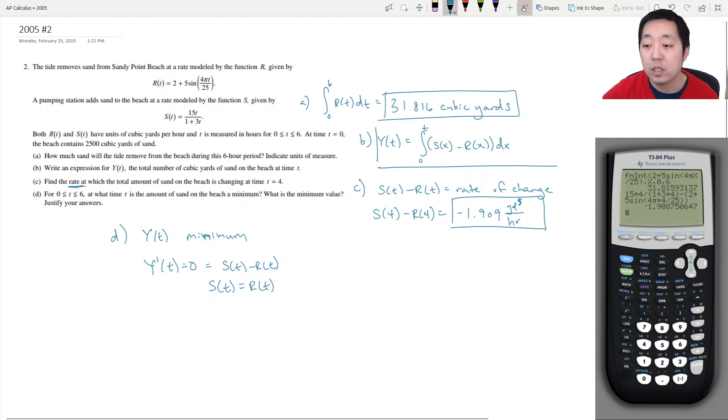And I do that by graphing. To find when they're equal to each other, I can plot S of T minus R of T. So S of T is 15X divided by 1 plus 3X minus 2 plus 5 sine of 4 pi X divided by 25.